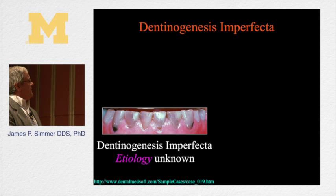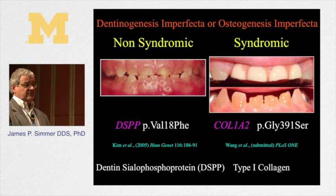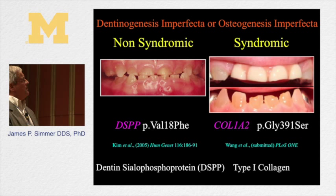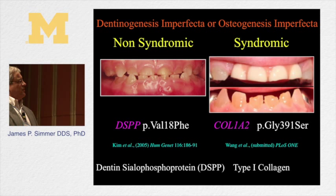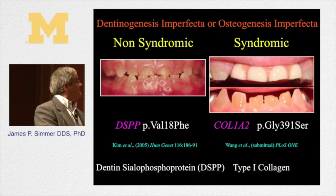This case may have looked like tetracycline staining, but it turns out to be dentinogenesis imperfecta. The mutation in this particular patient hasn't been identified. But we know from Dr. Hart's presentation that when you have dentin defects like this, the condition can be non-syndromic — caused by mutations in the DSPP gene, or dentin-sialophosphoprotein — or you can have syndromic forms that look the same but are caused by defects in the type 1 collagen gene. There are two different peptides in type 1 collagen.